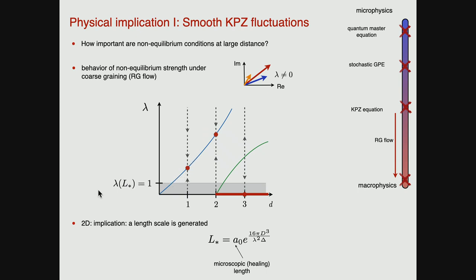Under RG, a length scale is generated below which you would say the system is still pretty close to equilibrium, and above which — at least in a crossover regime — the system approaches the strong non-equilibrium fixed point. If you solve for this length scale from the RG flow, you find that for very weak initial non-equilibrium perturbation, it's actually an exponentially large length scale in these two-dimensional systems. In one dimension it's not exponentially large.